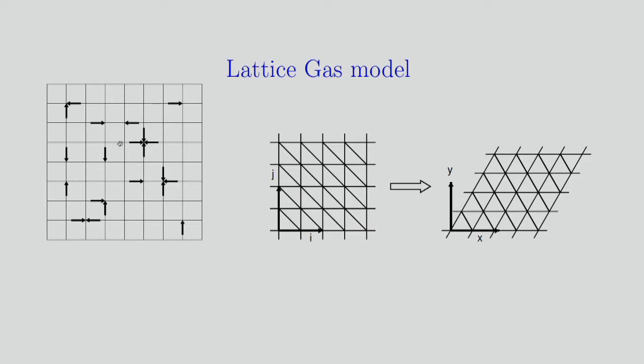A hypothetical molecule with some velocity shown by this arrow, and at each time step this particle will move according to the direction of the arrows to the next lattice site.